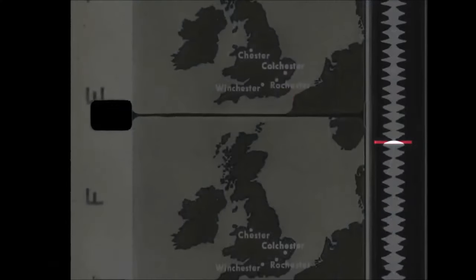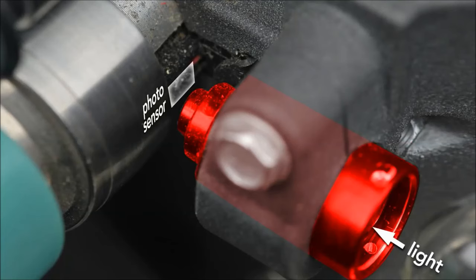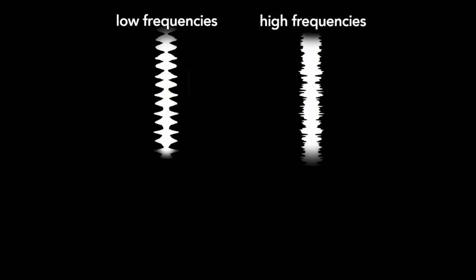A photosensor on the other side of the film measures the amount of light passing through the film at a given time. The photosensor converts the amount of light transmitted into current, and this current drives the speakers. A soundtrack that oscillates slowly produces low frequency sounds. If it oscillates more rapidly, it will produce higher frequencies. The volume is determined by the amplitude or width of the soundtrack. Louder sections are wide, and quieter sections are thinner.